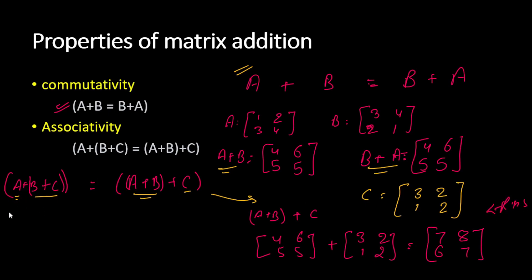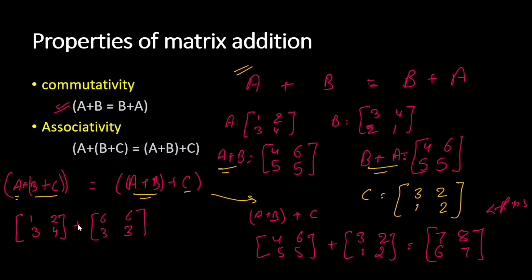For the left-hand side, we first compute B + C: 3+3=6, 4+2=6, 2+1=3, and 1+2=3. So B + C = [6, 6; 3, 3]. Now we add A = [1, 2; 3, 4]: 1+6=7, 2+6=8, 3+3=6, and 4+3=7. So LHS = [7, 8; 6, 7]. LHS equals RHS, so the associativity property also holds.